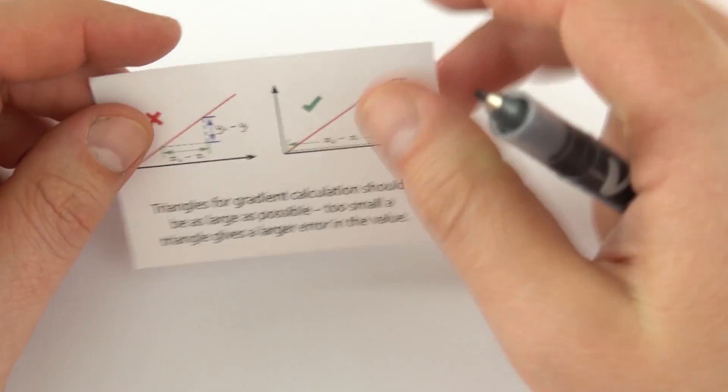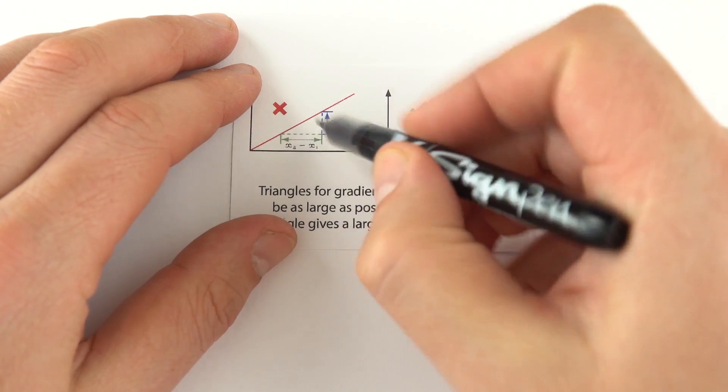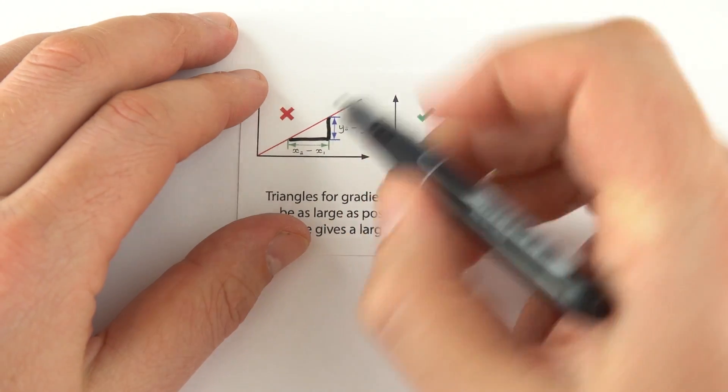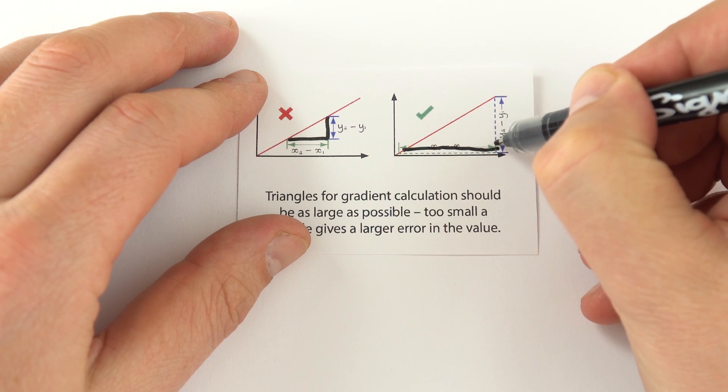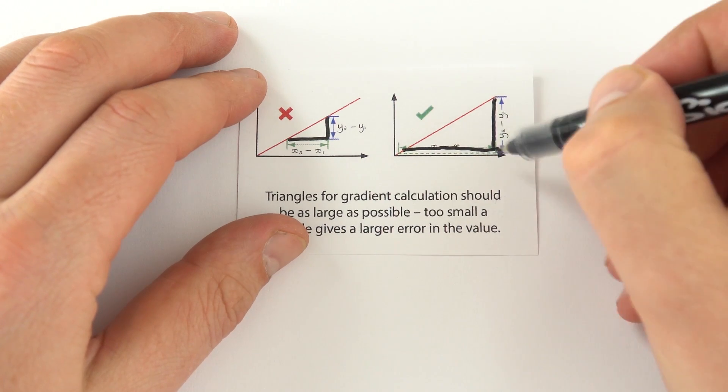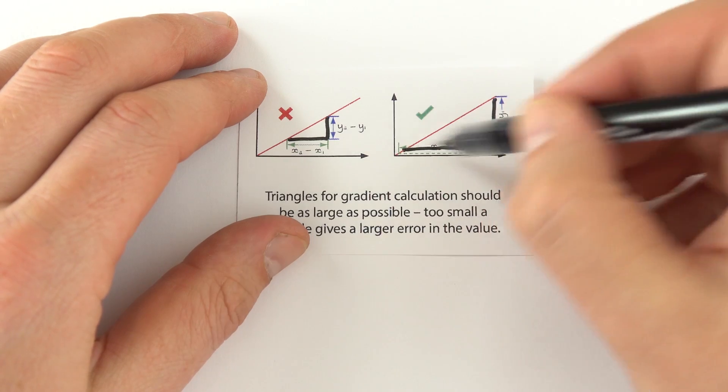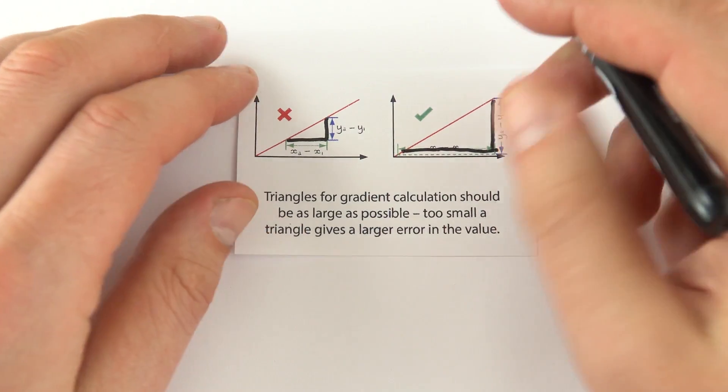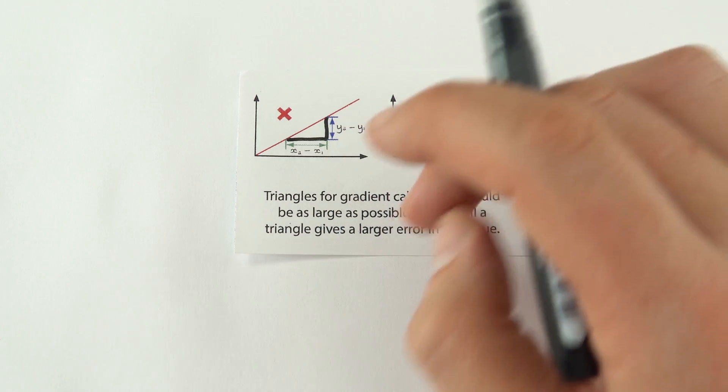You probably know this, but if you're going to work out the gradient, effectively they've drawn a really small triangle. That's not big enough. Draw a triangle that goes up to, and use a ruler, not like my pen, that goes up to the line. Make sure that this triangle is as big as possible. That means that you're going to have a much better value with less errors in your results.